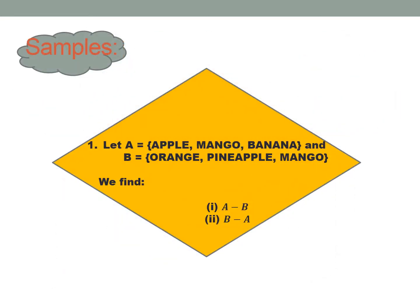We have examples. Number one: let the elements of A be apple, mango, and banana, and the elements of B be orange, pineapple, and mango. We find A minus B and B minus A.